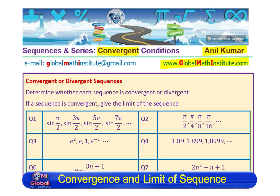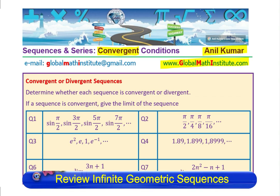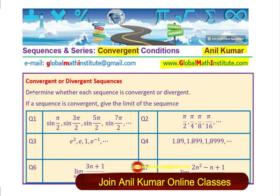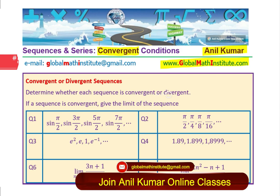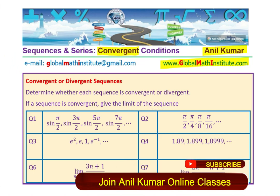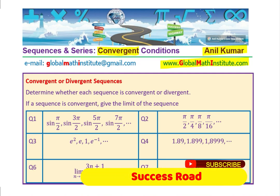There are many conditions which we could test for to see whether a sequence given to us is convergent or not. If the sequence is convergent, we can find its sum. The question here is: determine whether each sequence is convergent or divergent. If a sequence is convergent, give the limit of the sequence. There are six examples which we are going to consider, and these will help you understand the topic in great detail.